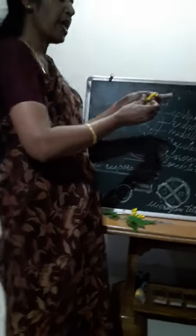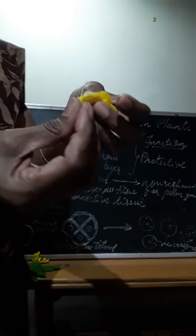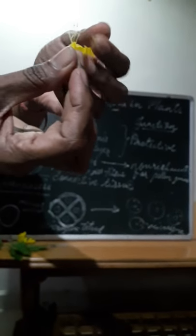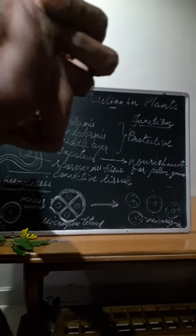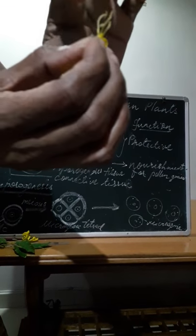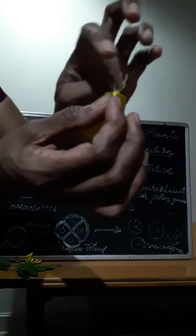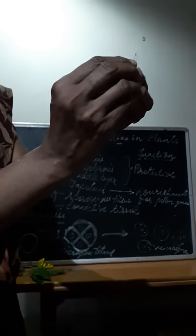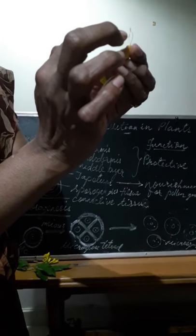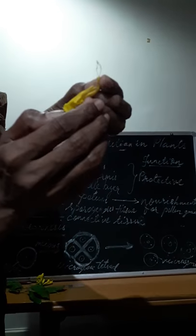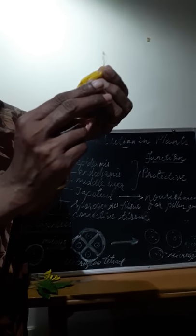Now, the male reproductive part are androecium. What we call it as? The stamens together, they are known as androecium. There are four stamens in this flower and these together, these stamens are known as androecium. The stamen consists of two parts, mainly two parts, the slender tube-like structure, that is filament and the top, you can see the yellow color, that is anther. The two parts of the male reproductive unit is filament and anther together made up of stamen.